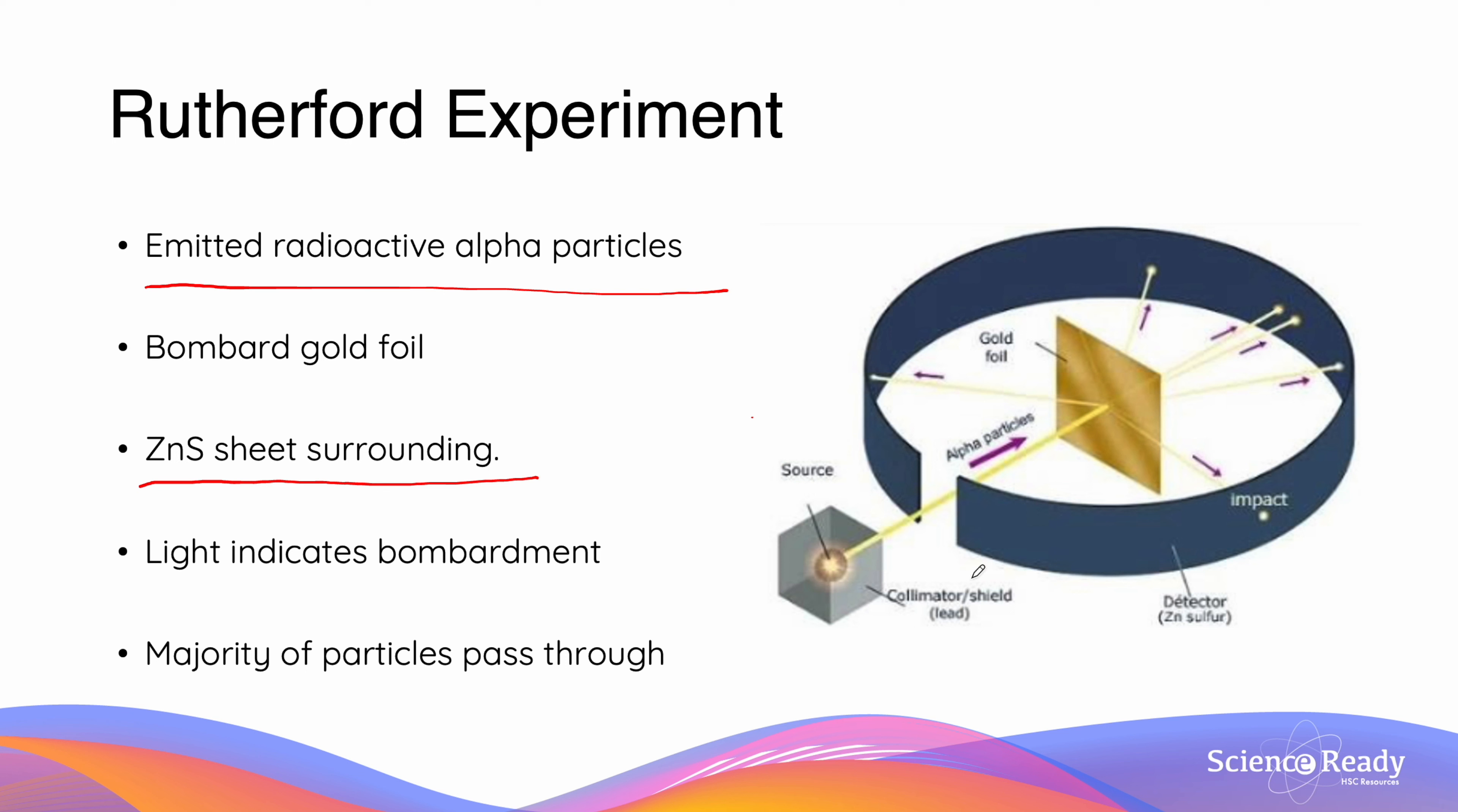After they conducted this experiment, they saw that the majority of particles passed through the gold foil, and the flashes of light were seen mostly behind the gold foil, thus proving Rutherford's hypothesis.